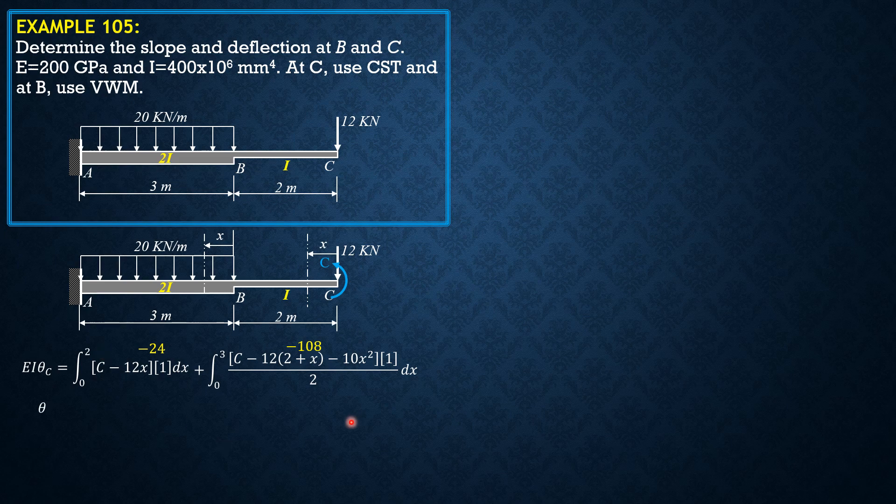Combining theta C is negative 132 over EI. So theta C is negative 132. Since EI is 200 gigapascals times I 400 times 10 to the 6 over 1,000 to the 4th. The result is 80,000 kilonewton meters squared.